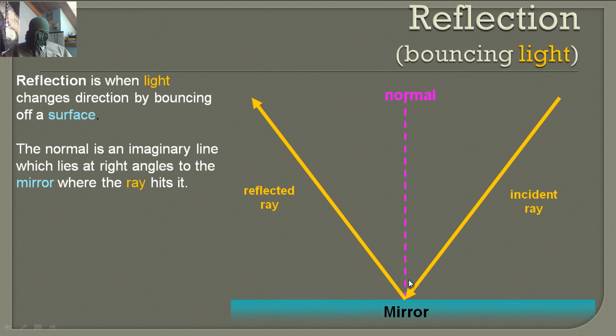The normal line is always going to be right where the incident ray hits the mirror, and it's going to be perpendicular to the surface it's hitting. Perpendicular means 90 degrees — hence right angle.